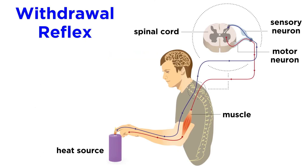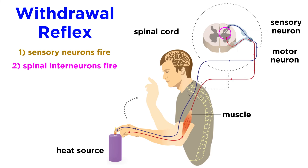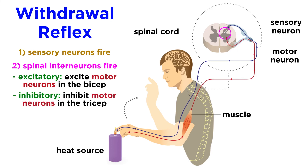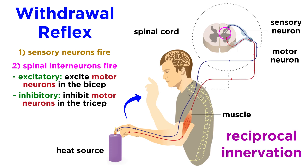There is also the withdrawal reflex — more like when you touch something hot and suddenly pull your hand away without even having to think about it. The stimulus causes sensory neurons to fire, and this excites spinal interneurons, which do two things: excitatory spinal interneurons excite motor neurons in the bicep, and inhibitory spinal interneurons inhibit motor neurons in the tricep. This simultaneous action causes a rapid jerking motion in the arm — the fastest way to get you out of danger. This strategy of combining the excitation of certain neurons with the inhibition of others is called reciprocal innervation, and it is very common.